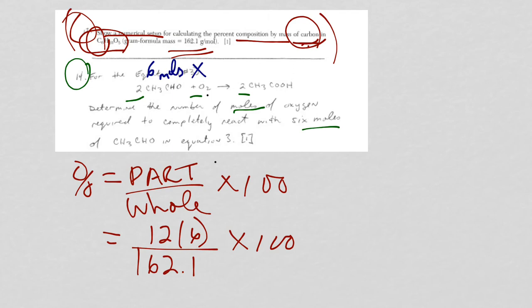And then, below the equation, I write the coefficients. So in front of CH3CHO is a 2. In front of O2 is a 1. And what that does, it gives me a proportion. 6 over 2 is equal to X over 1.